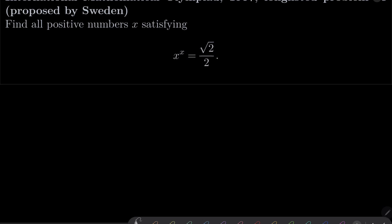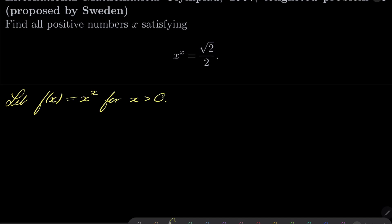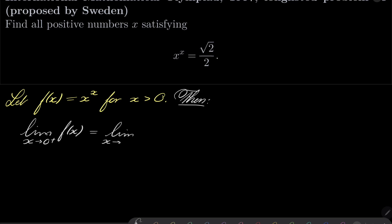Let's start by considering our function. Let f of x be equal to x to the power of x for positive numbers. First I will investigate the limit as x goes to 0 from the right-hand side of f of x. The classical trick is to write x to the power of x as e to the power x natural log of x. So it is e to the power of the limit as x goes to 0 from the right-hand side of x natural log of x.